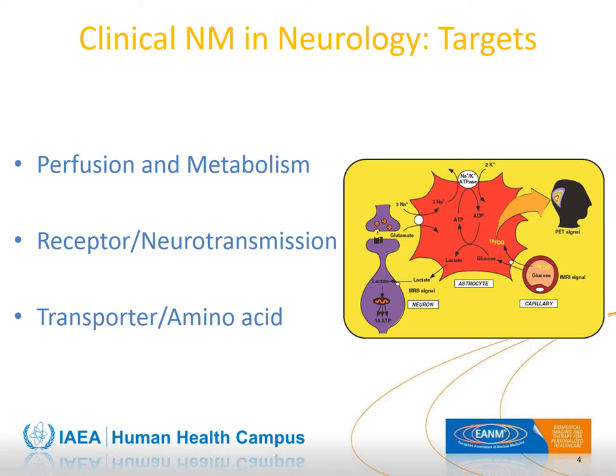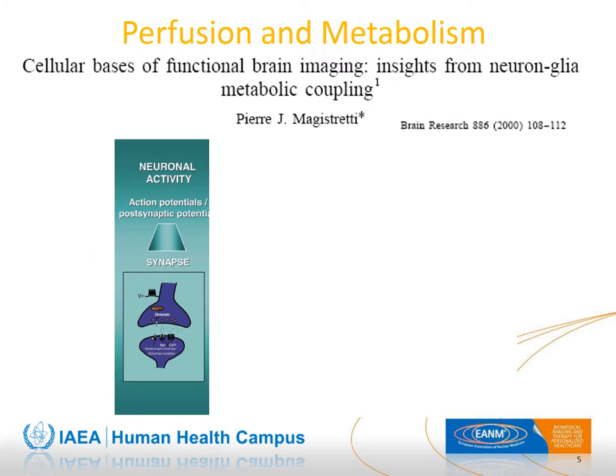Targets for clinical nuclear medicine imaging in neurology include brain perfusion and metabolism, receptor and thus neurotransmission imaging, transporter imaging, also including amino acid transporter imaging.